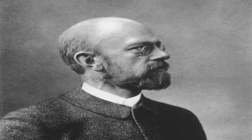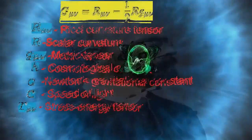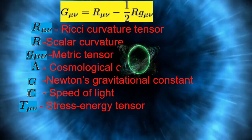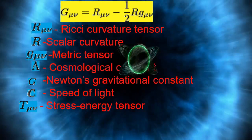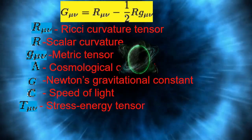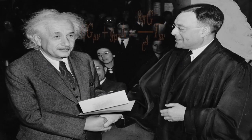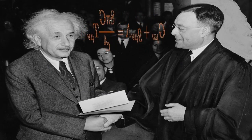The Einstein field equations are a set of ten equations contained in the tensor equation given below, which describe gravity as a result of space-time being curved by mass and energy.